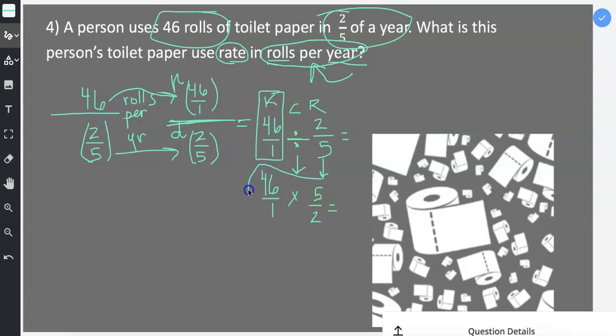And then you multiply the numerators, 46 multiplied by 5. You might be able to do that in your head. If you can't, go ahead and use your process for multiplication. 6 times 5 is 30, I put a 0 here and carry the 3. 4 times 5 is 20, plus 3 is 23, so I get 230.